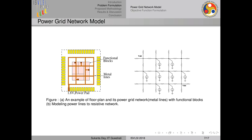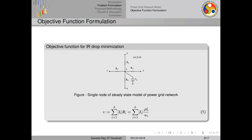The power grid is a very complicated network, so we are forming it as a steady-state network considering only resistance elements. For the functional blocks, we have designed them as current sources going to ground, and we have done all our analysis and optimization on such a circuit netlist.